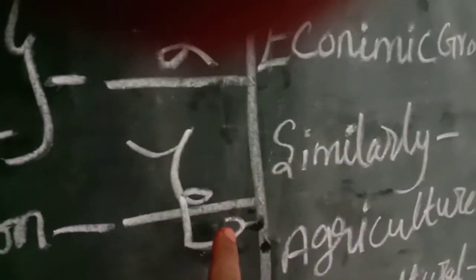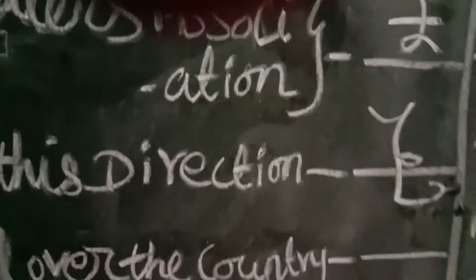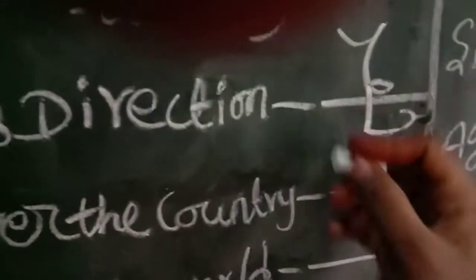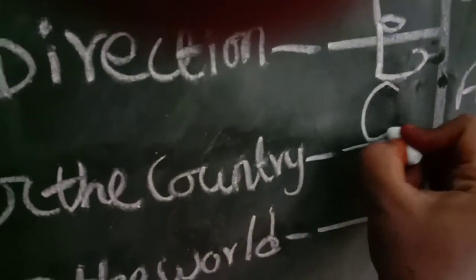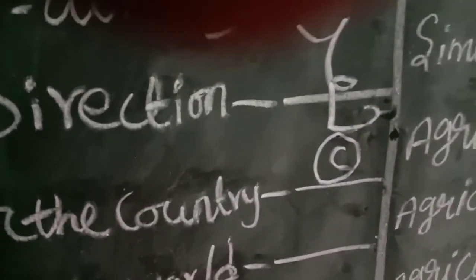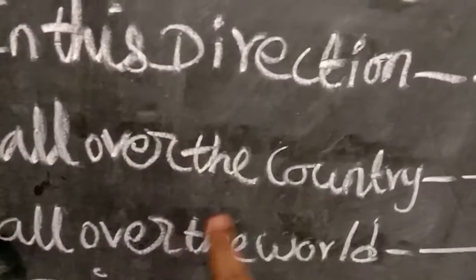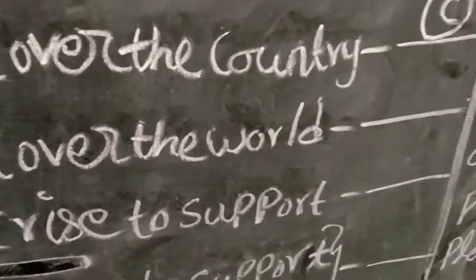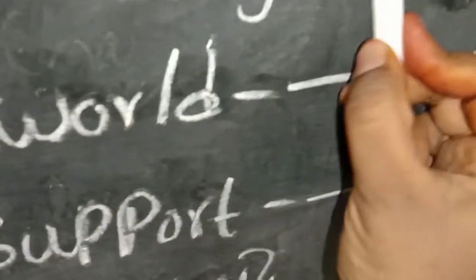This is the direction of the country. If you want to look at all over the country, you can look at the circle board. You can see the circle board.